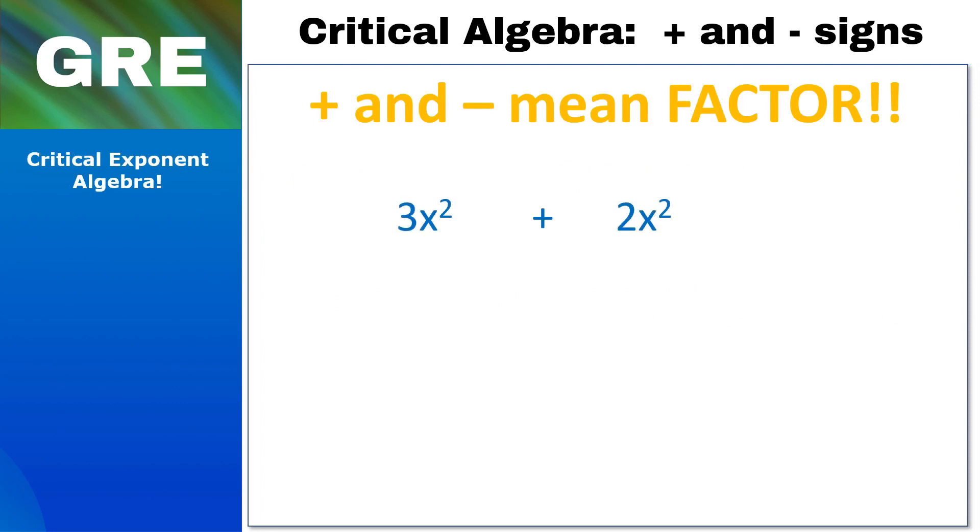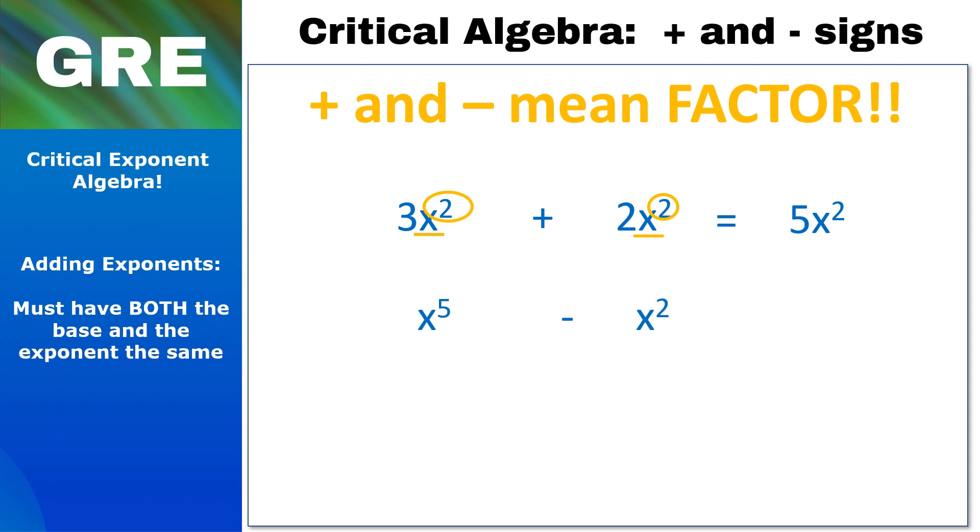So if you start with 3x² and you add another 2x², well that's no problem, that gives you 5x². The thing is though, in order to add exponents you have to have both the base and the exponents the same, and how often do you think they're going to be nice and give you that? Yeah, exactly, basically never. And this gets tricky because they're going to give you this: x⁵ minus x² does not equal x³.